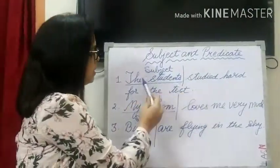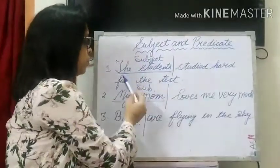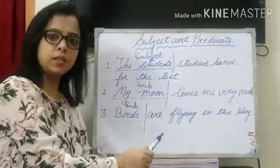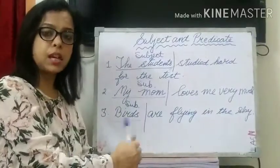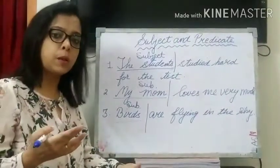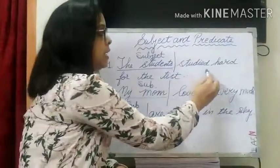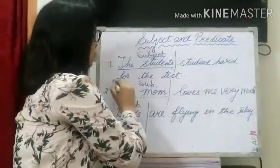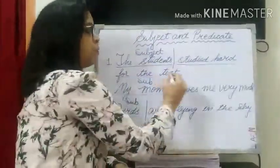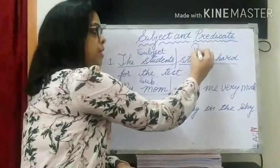Like in this sentence — the students studied hard for the test — we know that the students is the subject. And what are we talking about the students? 'Studied hard for the test' — so this part, studied hard for the test, is the predicate.